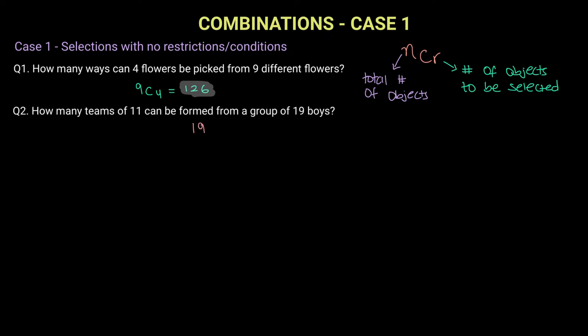Out of 19 boys we are choosing 11. 19C11 gives you 75,582. There are 75,582 ways of selecting 11 boys from a group of 19.